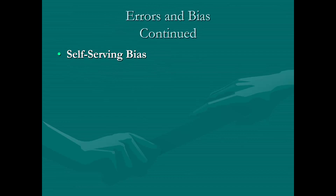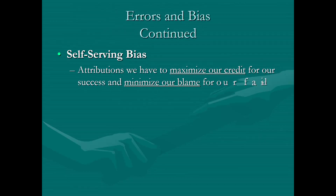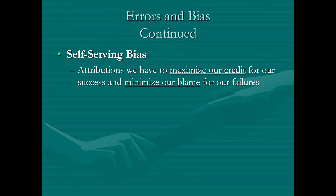The last one we're going to cover is something called the self-serving bias. This differs from the other two in that it's more inwardly focused — we're not really looking at other people; it's more about explaining our own behavior. Self-serving bias refers to the attributions we make to maximize our credit for success and minimize blame for failure. When we do something successful and great, we really pump ourselves up and show that to the world. However, when we fail, it's quite a different story — we try to hide or minimize that.